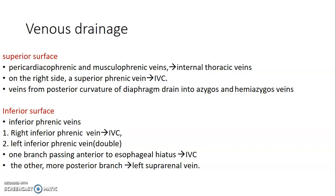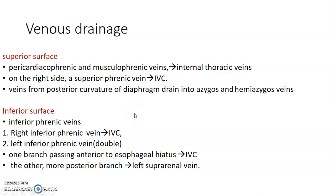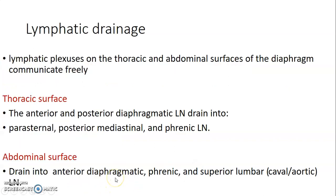Venous drainage of the diaphragm is also surface-based. The superior surface drains via internal thoracic vein through pericardiophrenic and musculophrenic tributaries. On the right, the superior phrenic vein drains into the inferior vena cava, and the posterior part drains into the azygous and hemiazygous veins. For the inferior surface, the right inferior phrenic vein drains into the inferior vena cava. On the left, there are two left inferior phrenic veins: one passing anterior to the esophageal hiatus drains into the inferior vena cava, and the posterior branch drains into the left suprarenal vein.